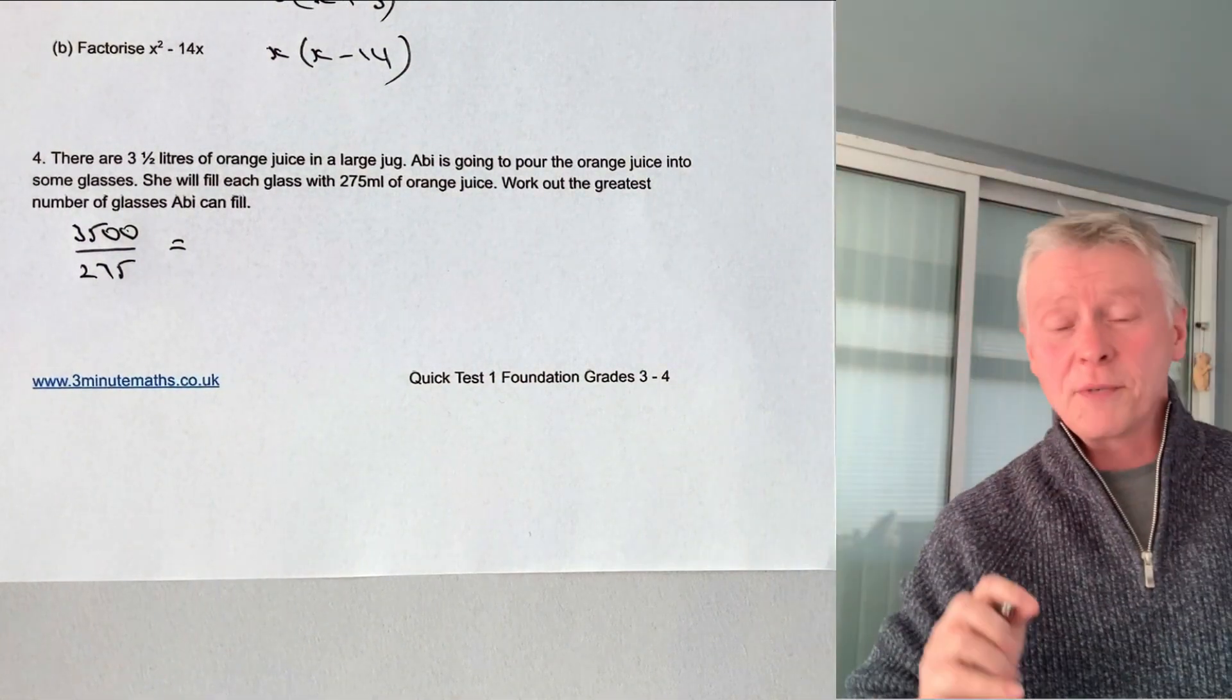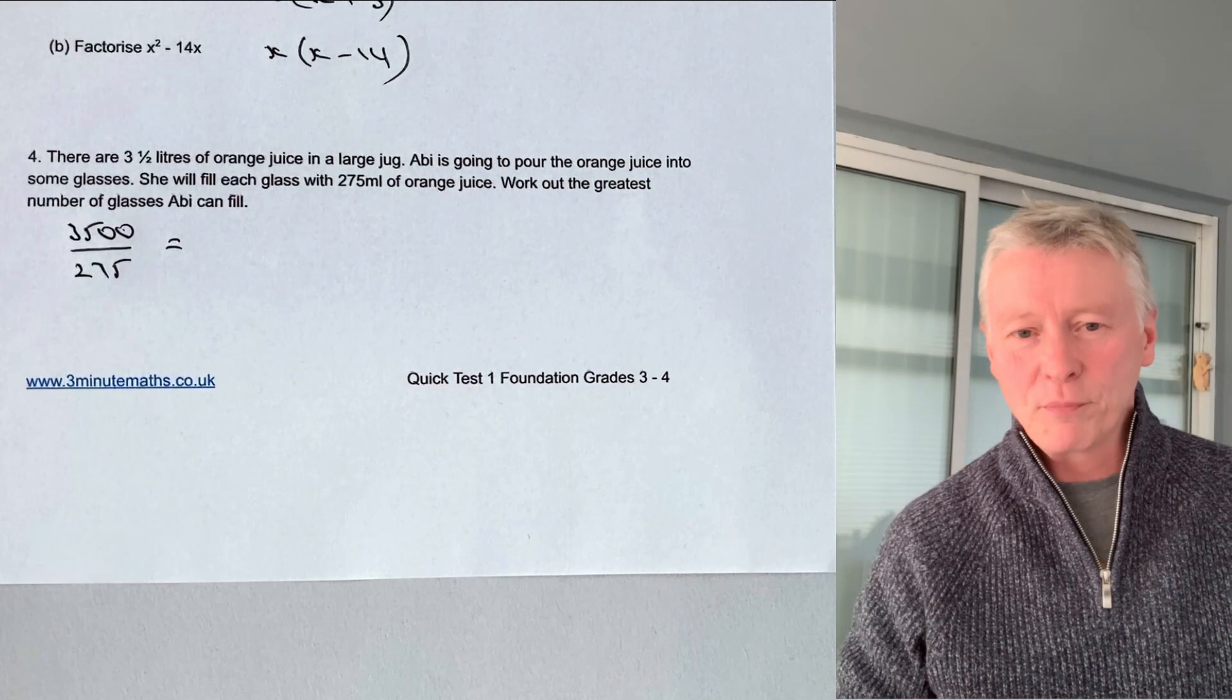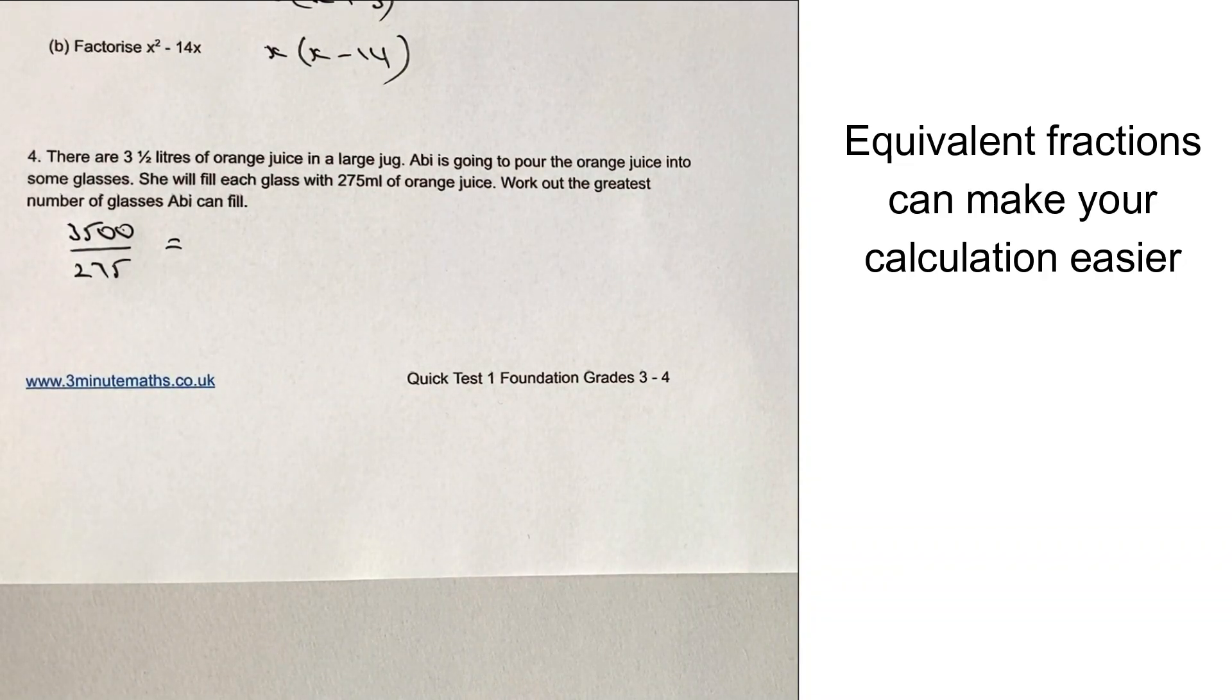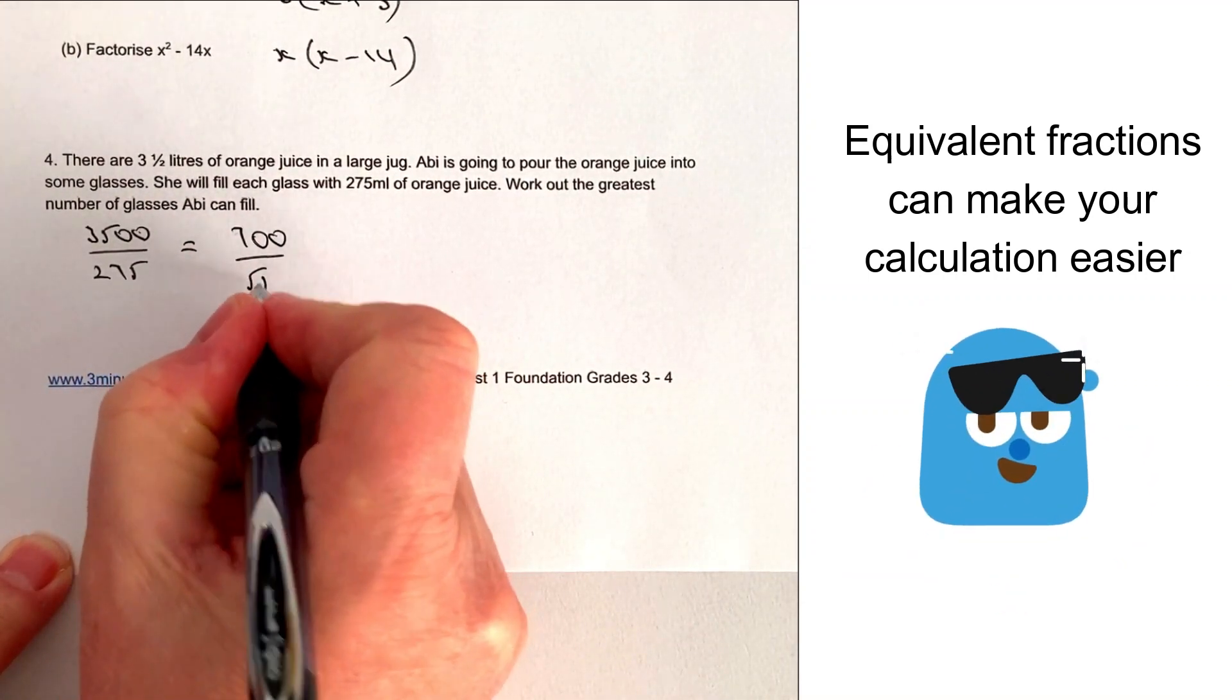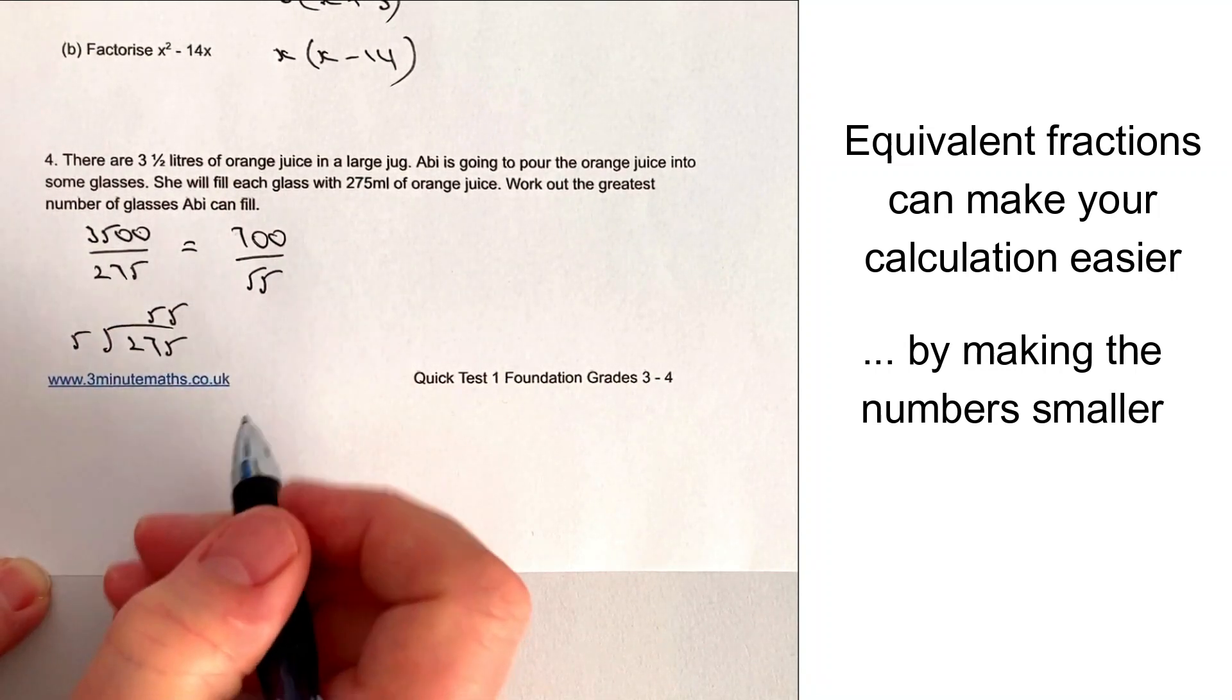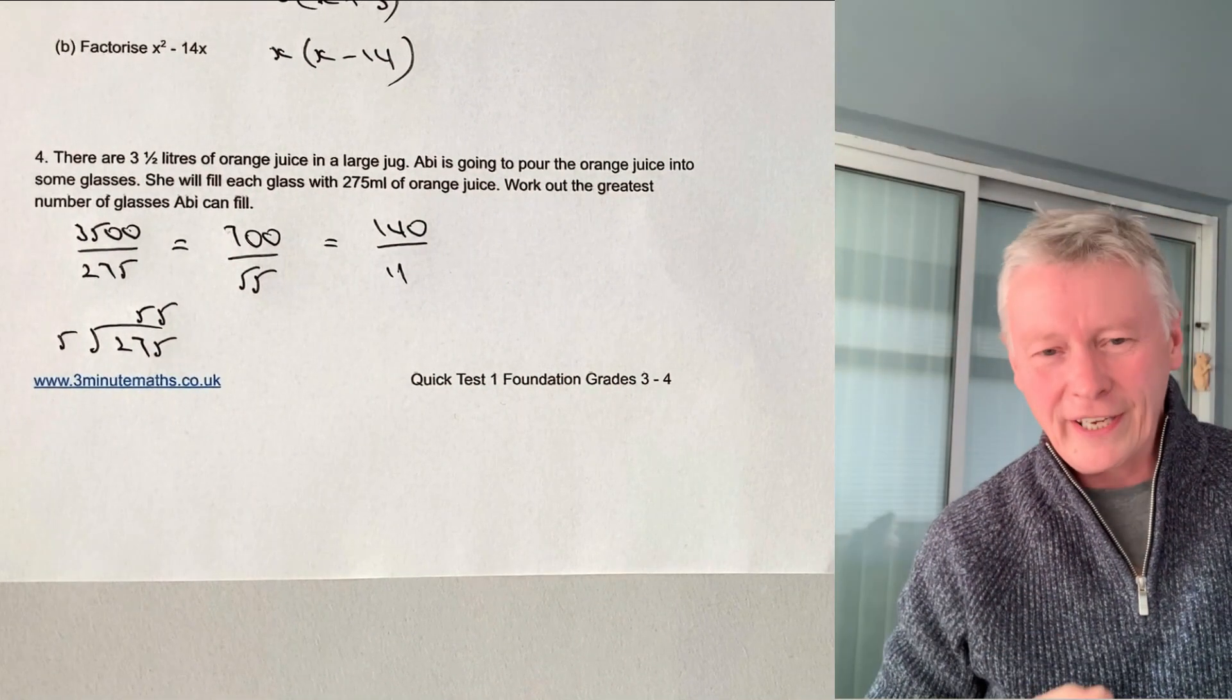Now, the reason I'm going to do that is because I can make my calculation a lot easier by using equivalent fractions. Now, you could, if you wanted to, have a go at long division at this point. Might be a bit tricky to do that because the numbers are quite big, so I need to make the numbers a bit simpler for myself. So what I'm going to do is I'm going to divide top and bottom by 5. That's going to give me 700 over 55. And then I'm going to go and divide by 5 again, and that's going to give me 140 over 11. And that's a little bit more like it. It's much, much easier to divide by 11 than it is to divide by 275.